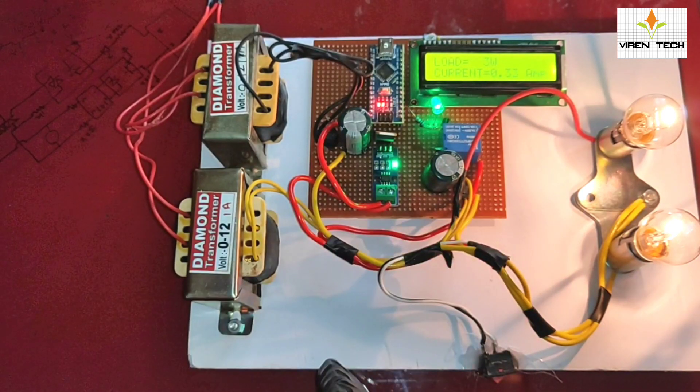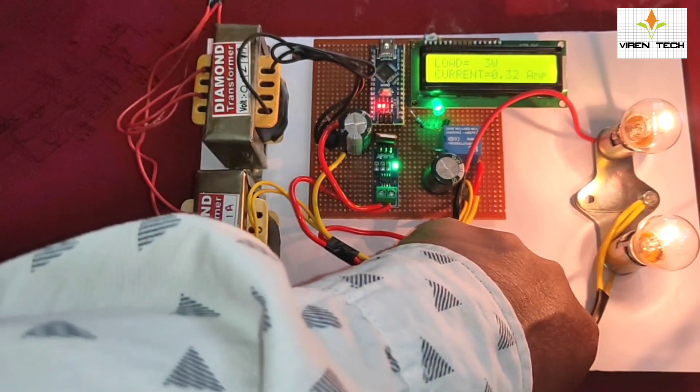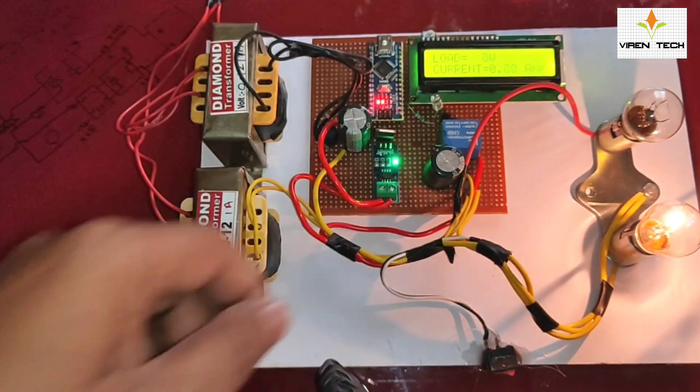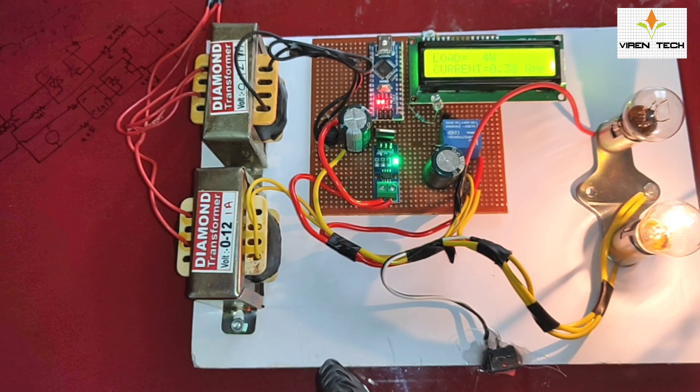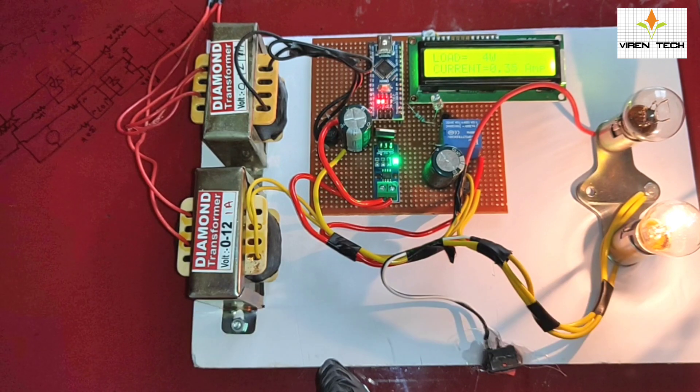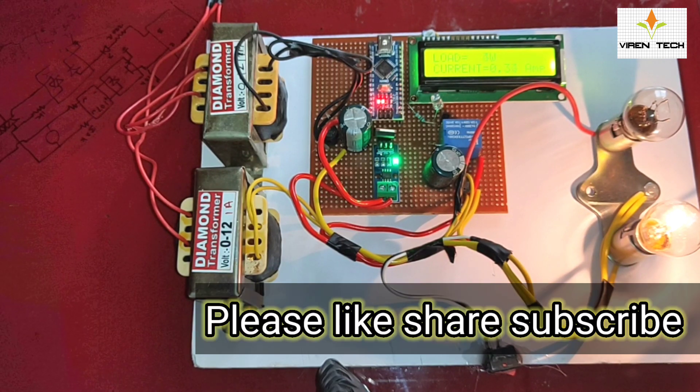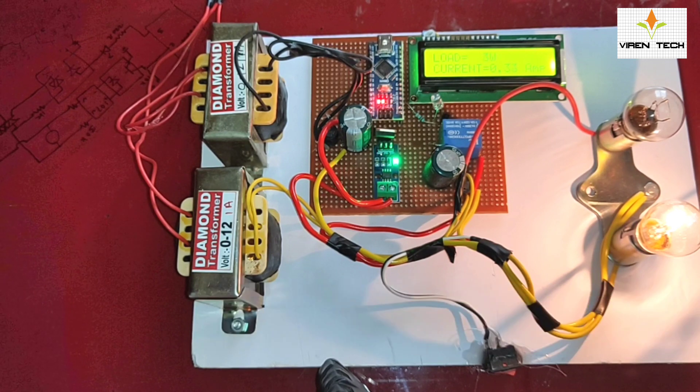In this way the load sharing concept works. Whenever there is an excessive load set from the level then the system will turn on or add the second transformer into the line so as to distribute the load equally onto both the transformers. This is a prototype model.